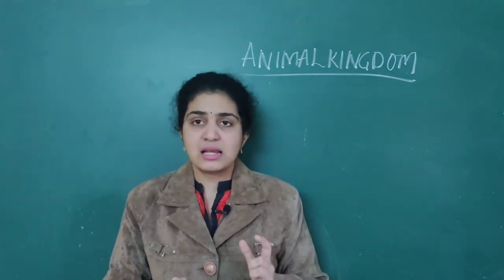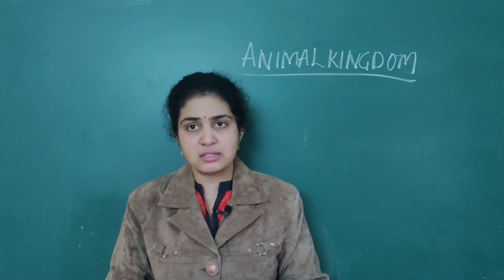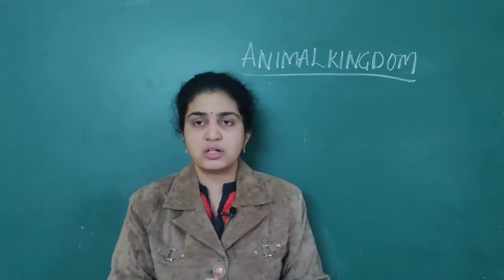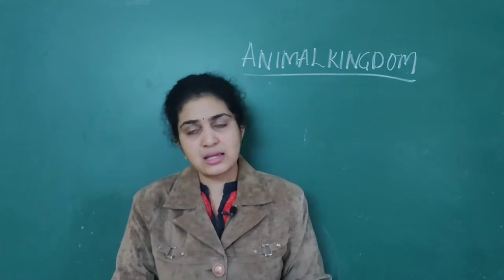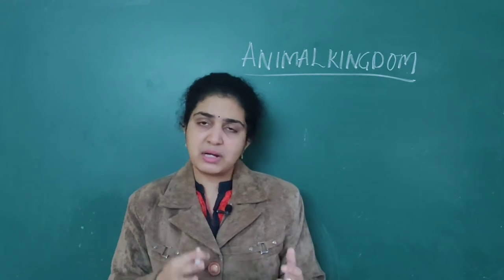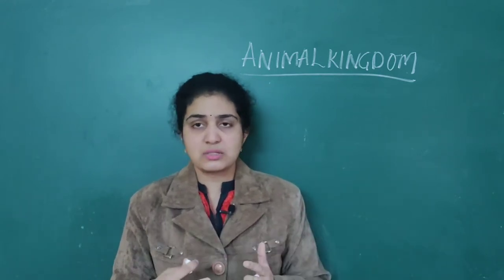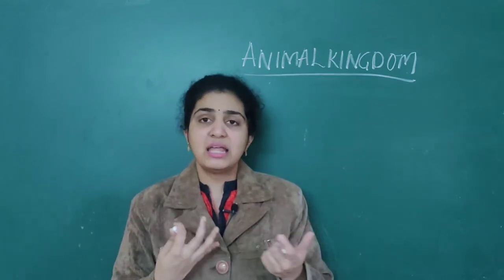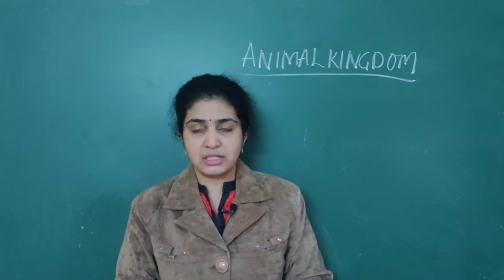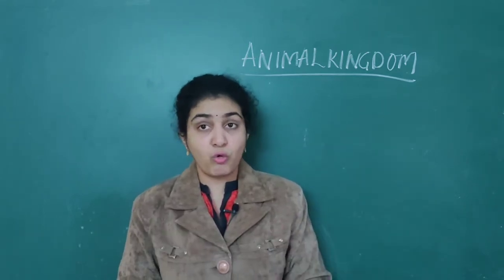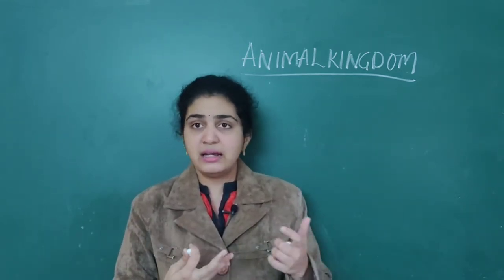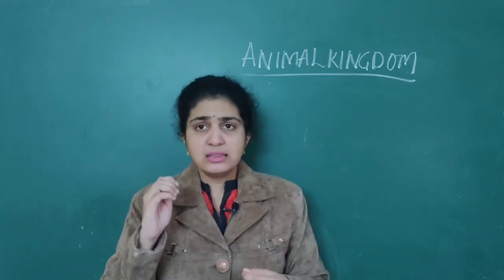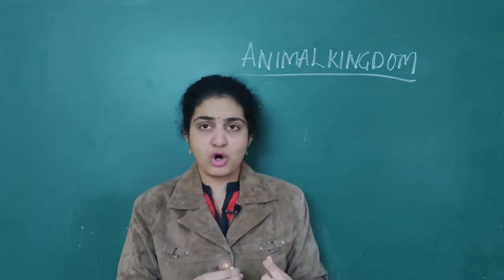Already in the last class we discussed about Chondrichthyes. Today we are going to deal about Osteichthyes as well as Amphibia. Similar features will be present in both Chondrichthyes and Osteichthyes, but there will be numerous differences. For example, Chondrichthyes are viviparous, while Osteichthyes are oviparous. You should remember all these clearly.